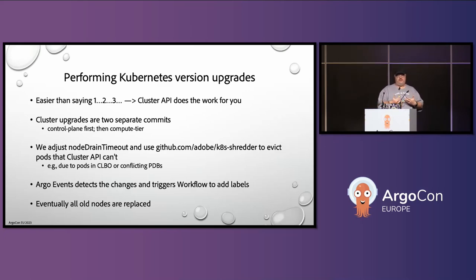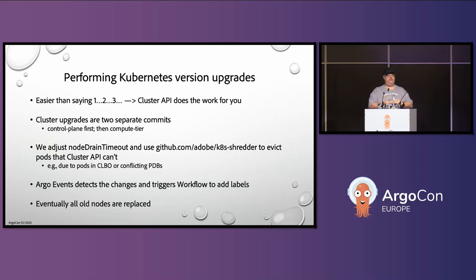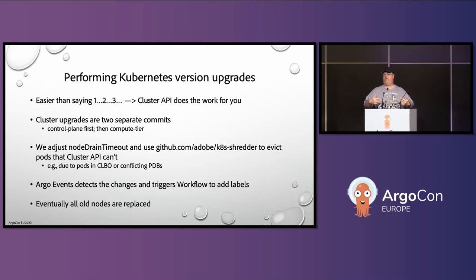Using the Argo ecosystem, we also have events that get triggered. When applies happen through Argo CD, an Argo event is created, sensors go through, and a workflow gets triggered. That workflow adds labels that Kate Shredder and other tools can use, and notifies tenants that upgrades are happening. It lets us tell tenants with a disruption budget of zero that they can do their own evictions and migration over that seven-day period. So we're forgiving with them and give them that time. Eventually all nodes are replaced, but from an infrastructure engineer's perspective all they did was one commit.